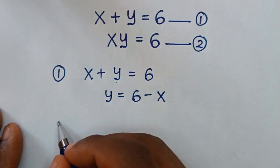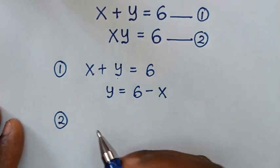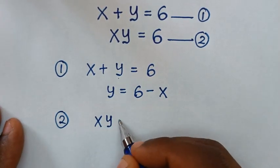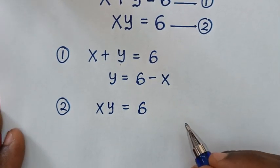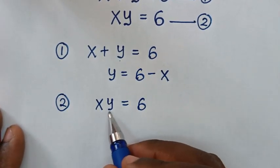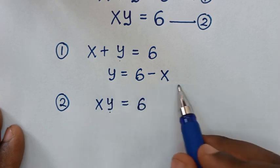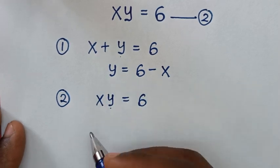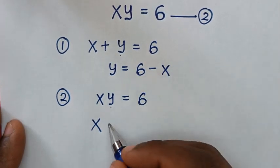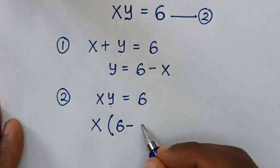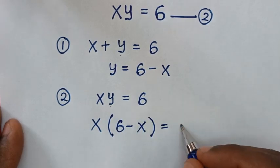In the next step, from equation 2 which is x times y equals 6, we substitute y with the expression we found: y is equal to 6 minus x. So it becomes x times (6 minus x) is equal to 6.